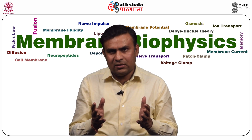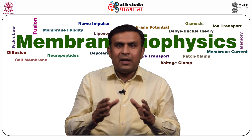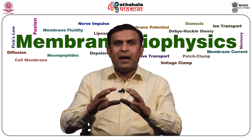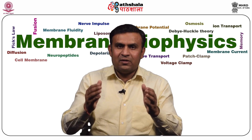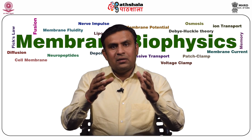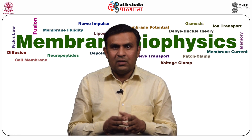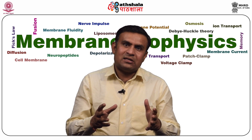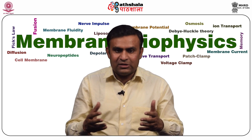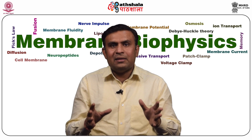Phagocytosis plays an important role in living systems. Consider the case of protozoa like amoeba — amoeba captures its food, such as bacteria and other protozoa, by phagocytosis. Phagocytosis also plays an important role in the defense mechanism. During the defense mechanism, cells kill and eliminate invading microorganisms and damaged cells from the body system.